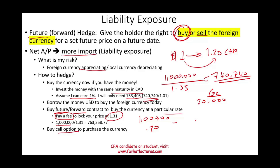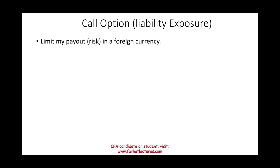You could also buy what's called a call option to purchase the currency. The difference between a call option and a forward or futures contract is that the call option is more tradeable and is an option — meaning you can exercise it or you don't have to. A call means you have the right, not the obligation, to buy the foreign currency (Canadian dollars) at a certain price. If you have accounts payable and the foreign currency goes up, you lose on the payable but make money on the call option.